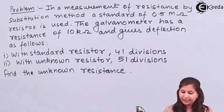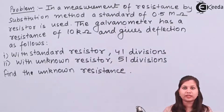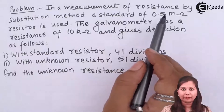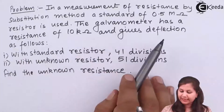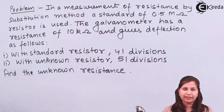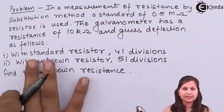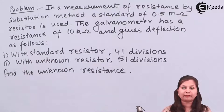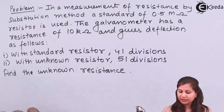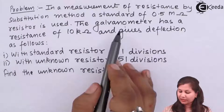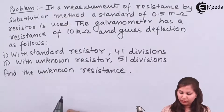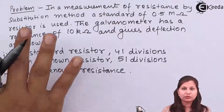We are measuring a resistance using the substitution method. Here we have used a standard of 0.5 mega ohm and the galvanometer has a resistance of 10 kilo ohm. The galvanometer gives a deflection of 41 divisions when the standard resistor is connected, and 51 divisions when the unknown resistor is connected. We have to find the unknown resistance.